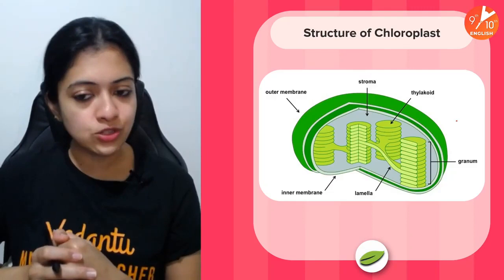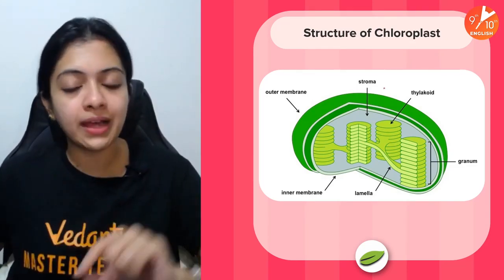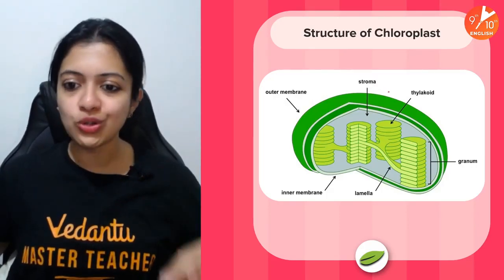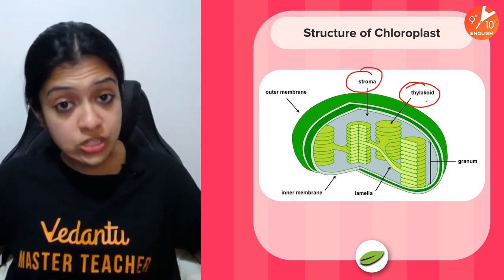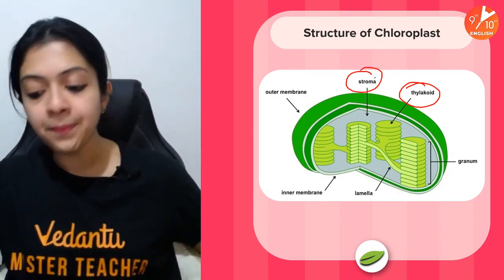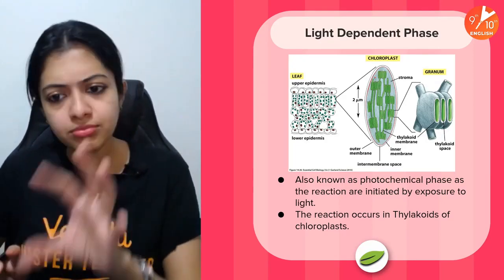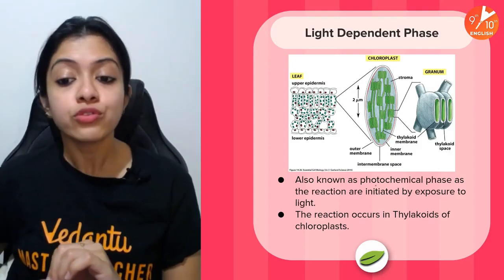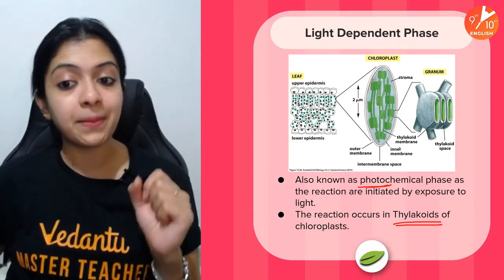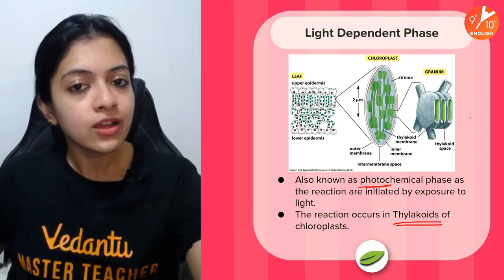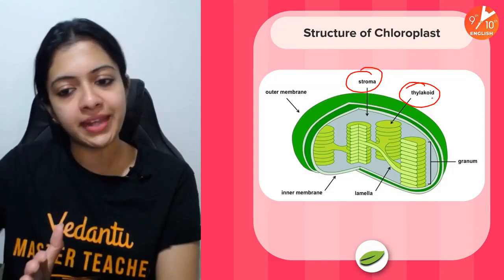Where does photosynthesis occur? It occurs in the chloroplast of the mesophyll cells. Inside the chloroplast, the two major parts you need to know are the thylakoid and the stroma. Phase one of photosynthesis occurs in the thylakoid; phase two occurs in the stroma. Phase one is the light dependent phase — also called the photochemical phase or light reactions — and it occurs specifically in the thylakoid membrane where chlorophyll molecules are concentrated.